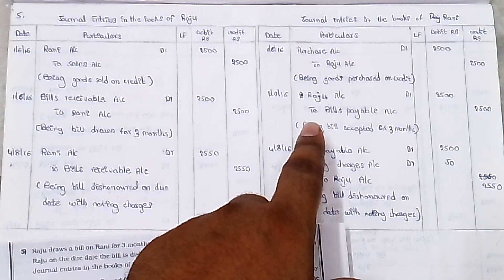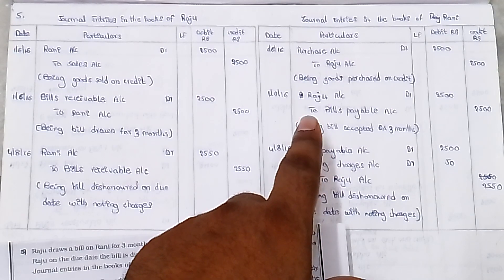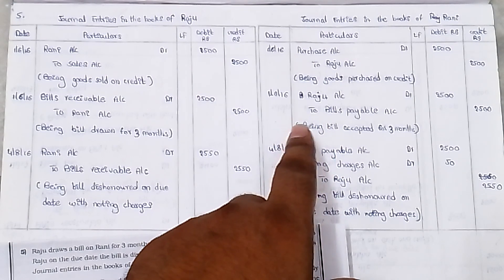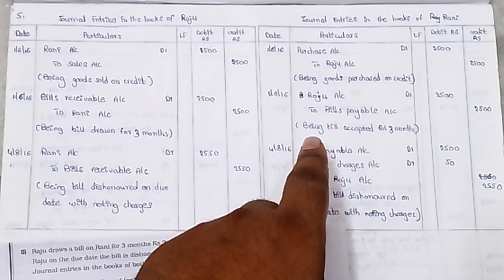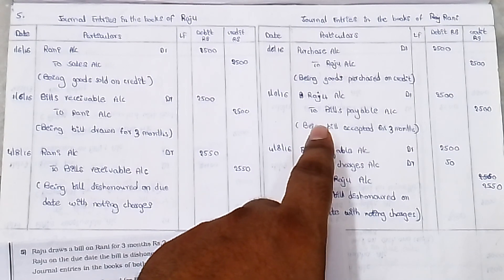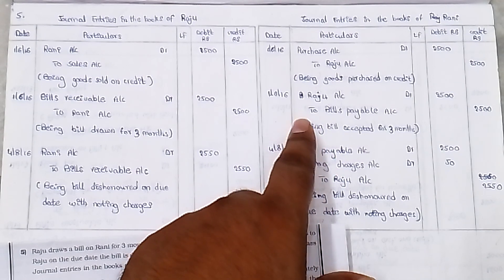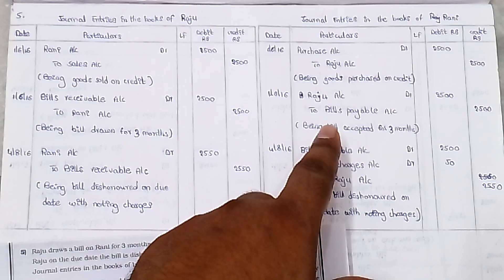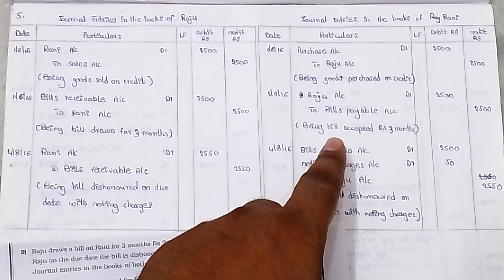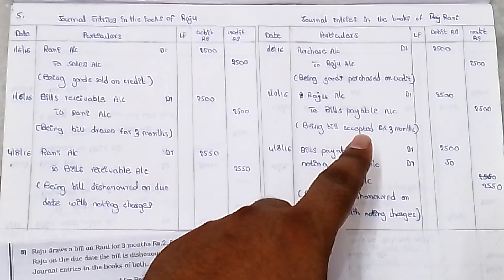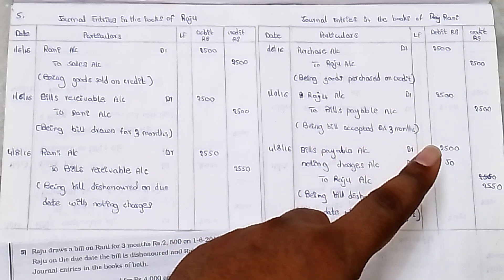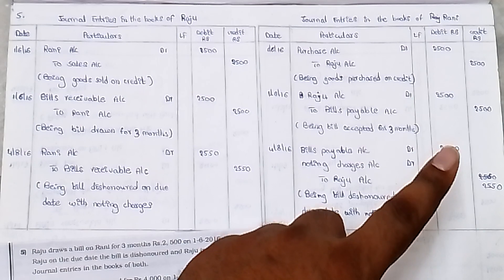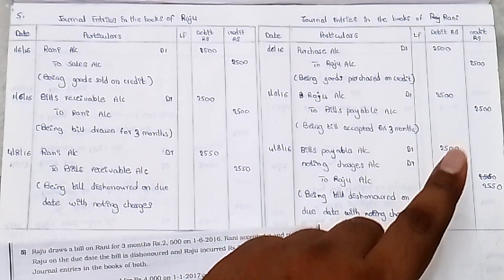In Rani's books, the bill accepted by Rani and returned to Rajoo. Entry: Rajoo account debit to Bills Payable account, being bill accepted for three months — amount 2500.